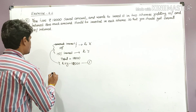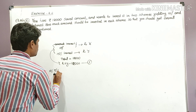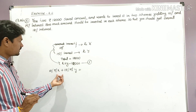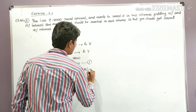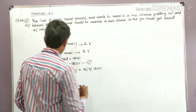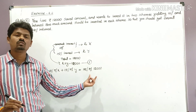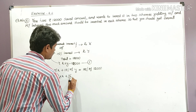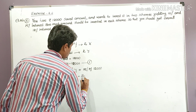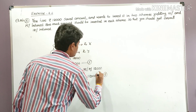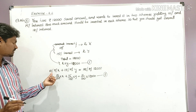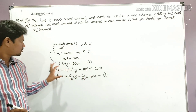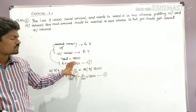Now for the interest condition: 10 percent of x plus 15 percent of y is equal to 12 percent of 12,000. That is, 10 divided by 100 into x, plus 15 divided by 100 into y, is equal to 12 divided by 100 into 12,000. This is our Equation number 2.